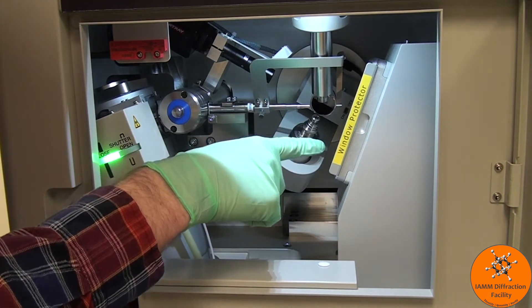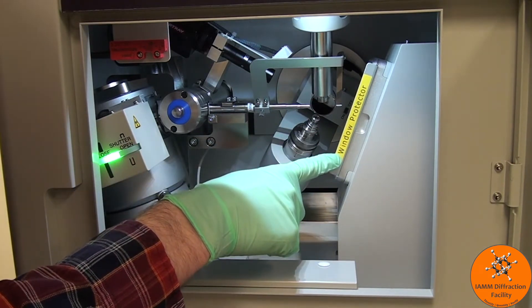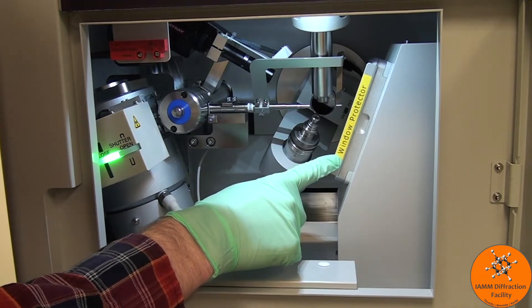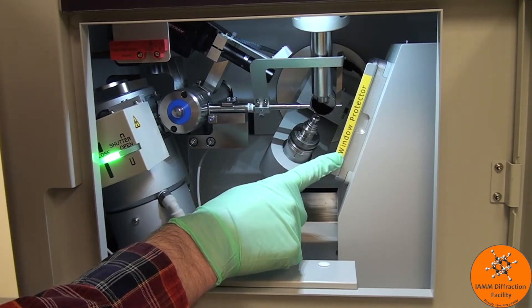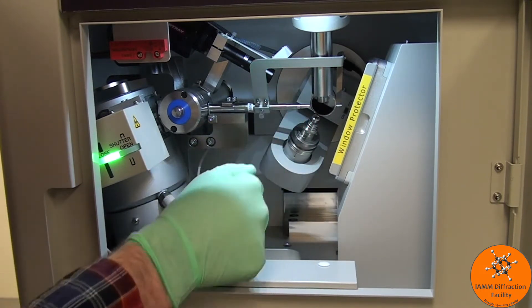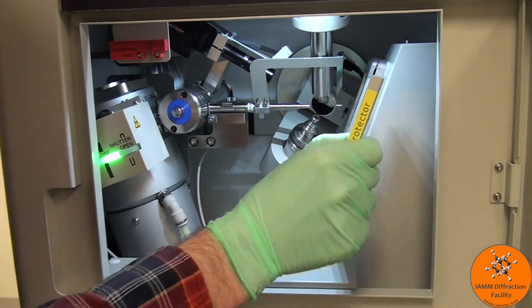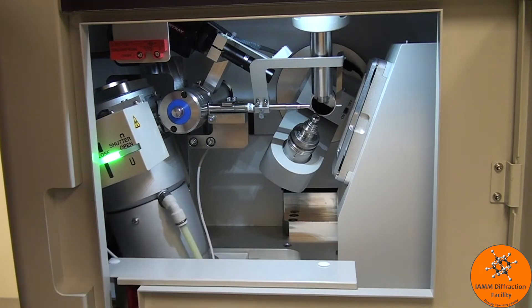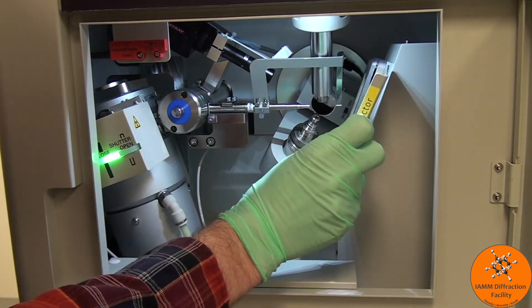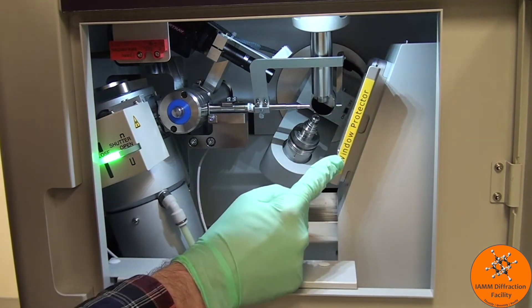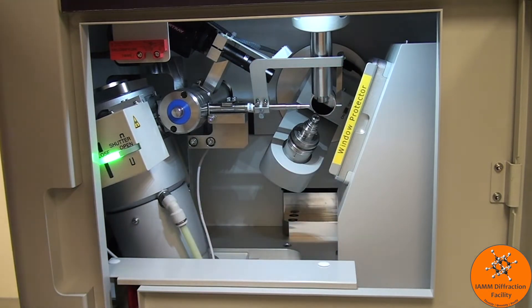This is the detector, and we see that we have a window protector. We always want to make sure that this is installed while we are in here working with the sample. In order to remove it, just slide it straight back once you are ready to perform your measurement. If you need to insert it, it should glide nice and smoothly. I will leave that installed so that I can mount and align the crystal.